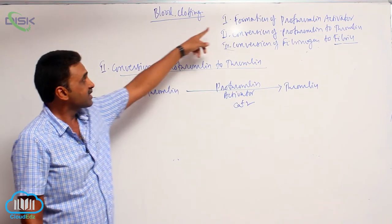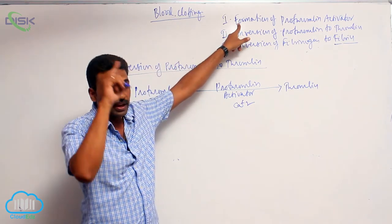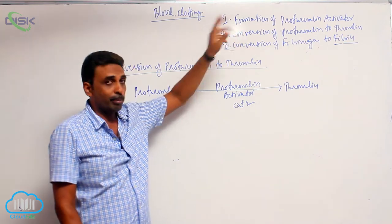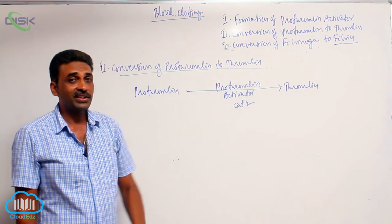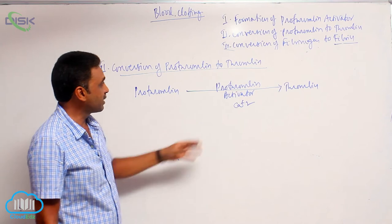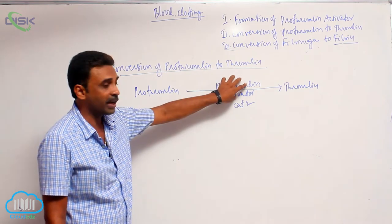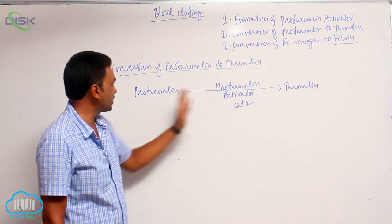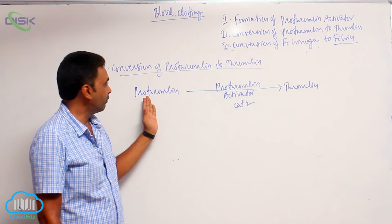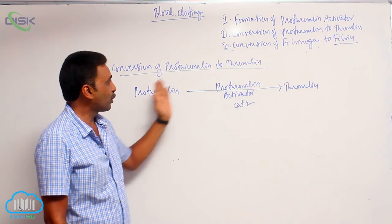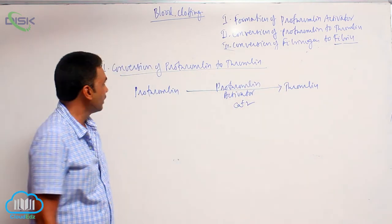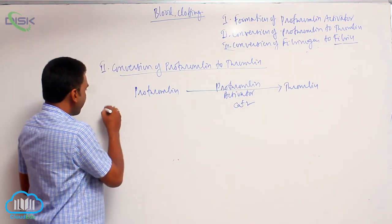In the first step we already saw that prothrombin activator is formed by both extrinsic as well as intrinsic pathways. In the second step, that prothrombin activator in the presence of calcium ions will convert the inactive prothrombin to active thrombin.